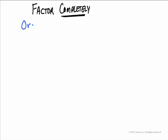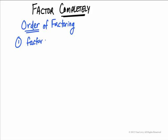We're going to define the concept of factoring something completely. To do that, we have an implicit order of factoring. For any problem that you have, you may be able to factor several different ways, but there's an implicit order that we use. The first thing you look at for any problem is you factor out the greatest common factor. That's always the first step.